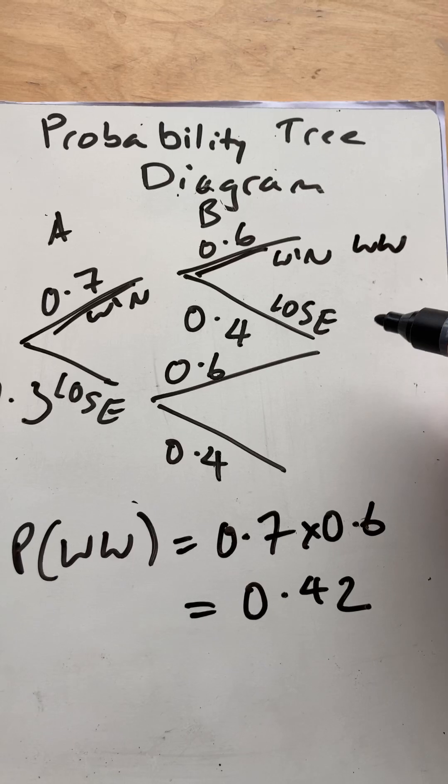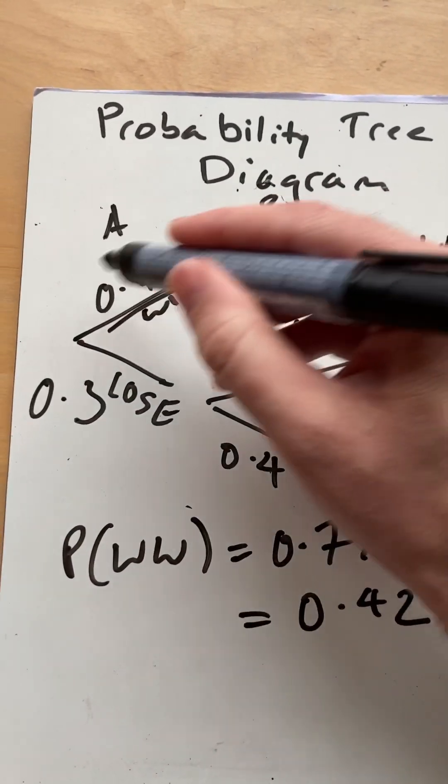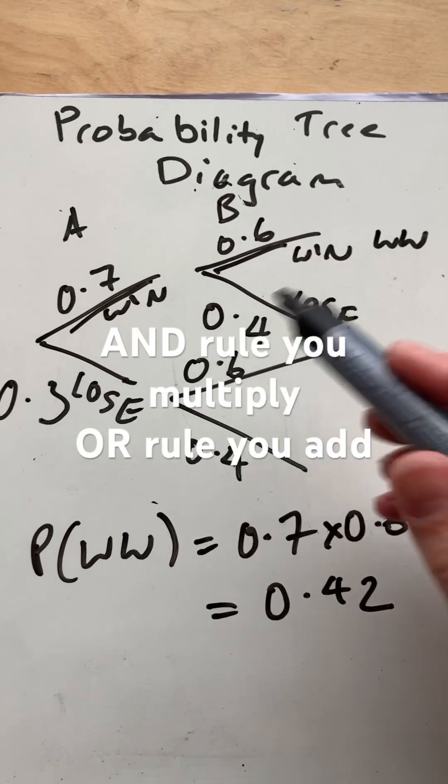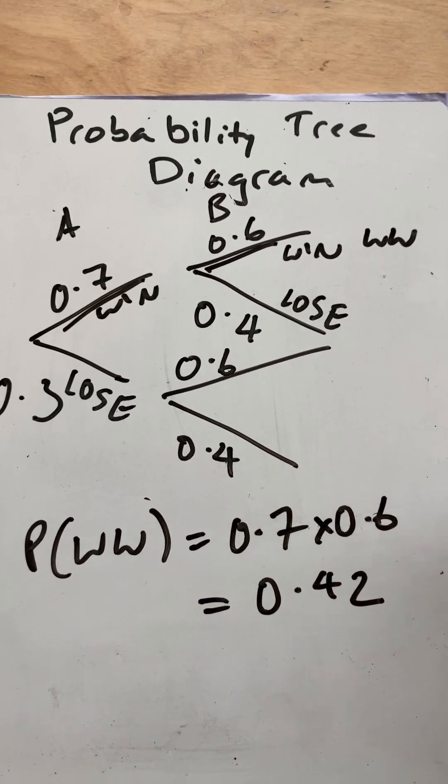So the main thing to see is that at every node, the probabilities must sum to 1, there, there, and there, and we can use the AND rule and the OR rule.